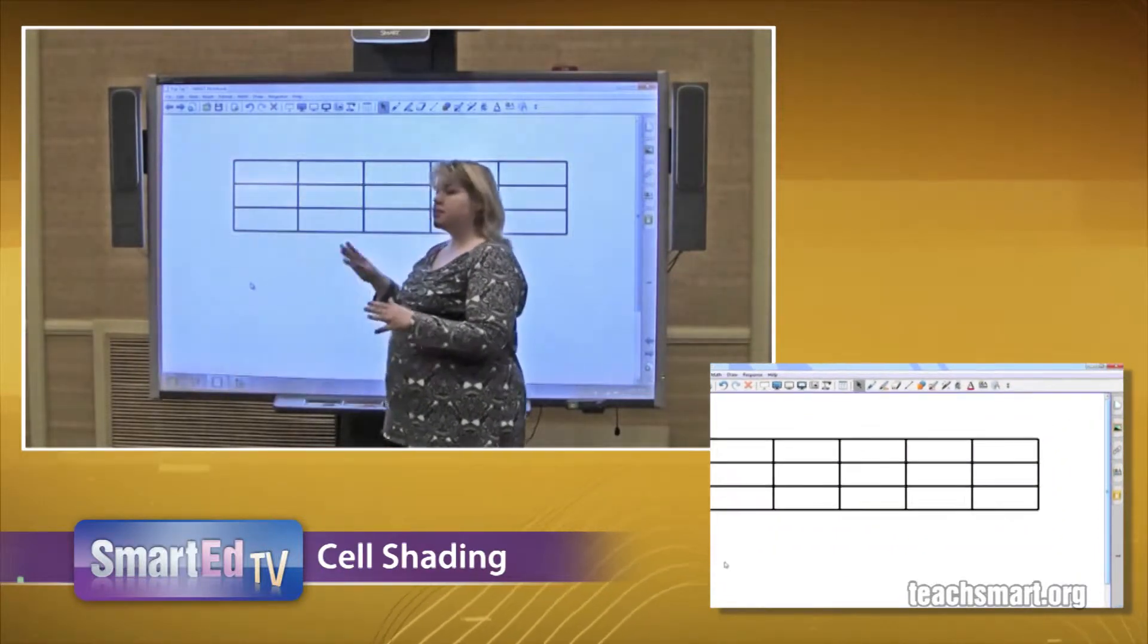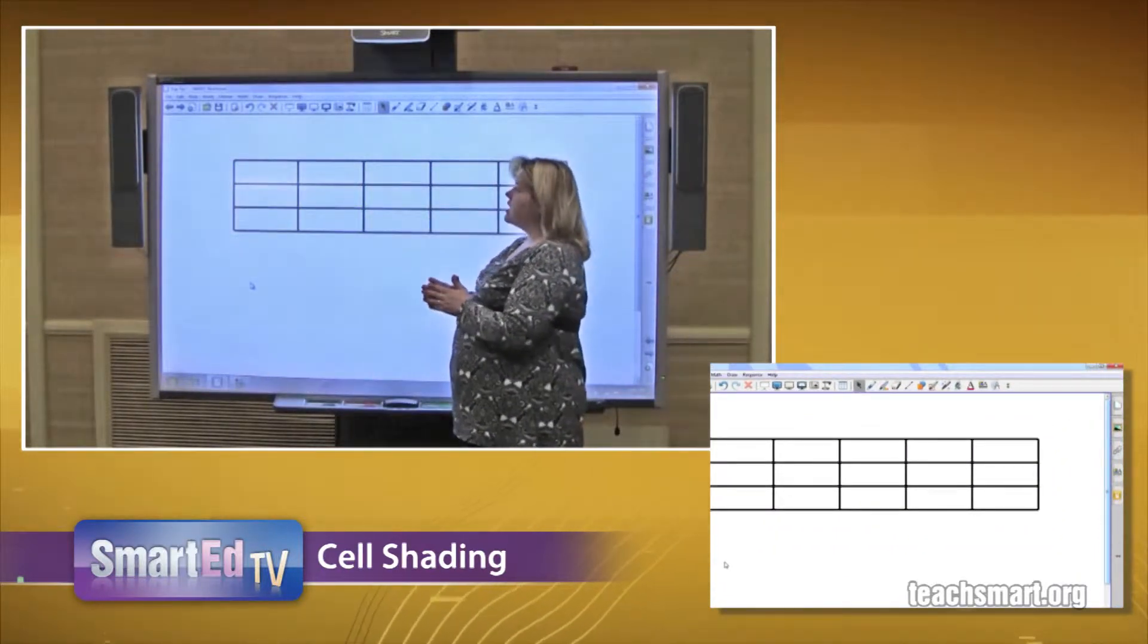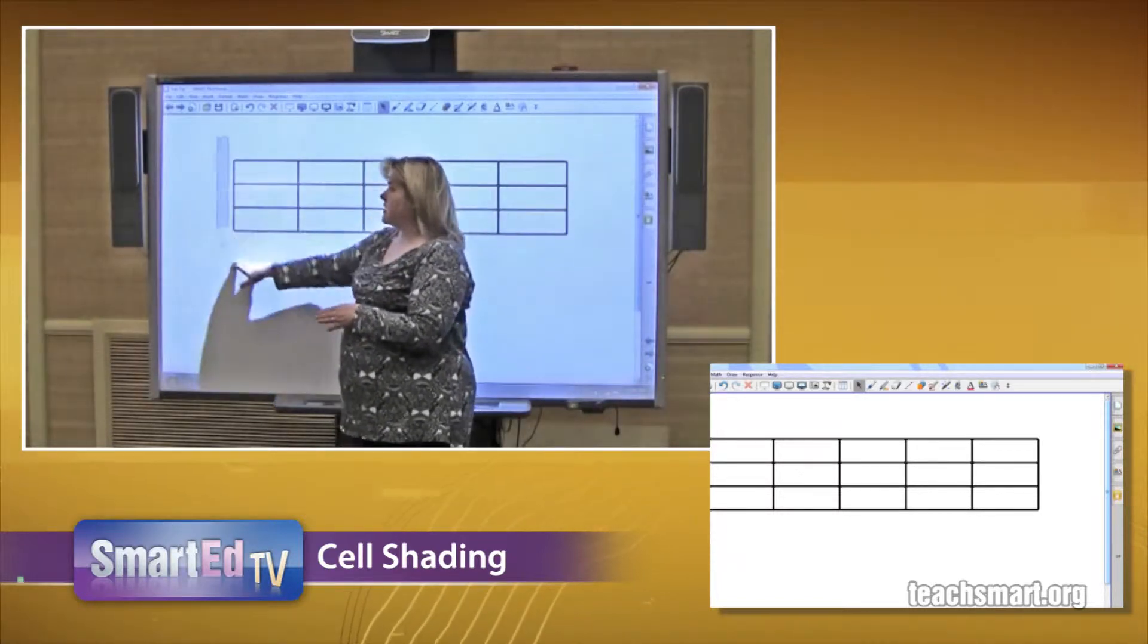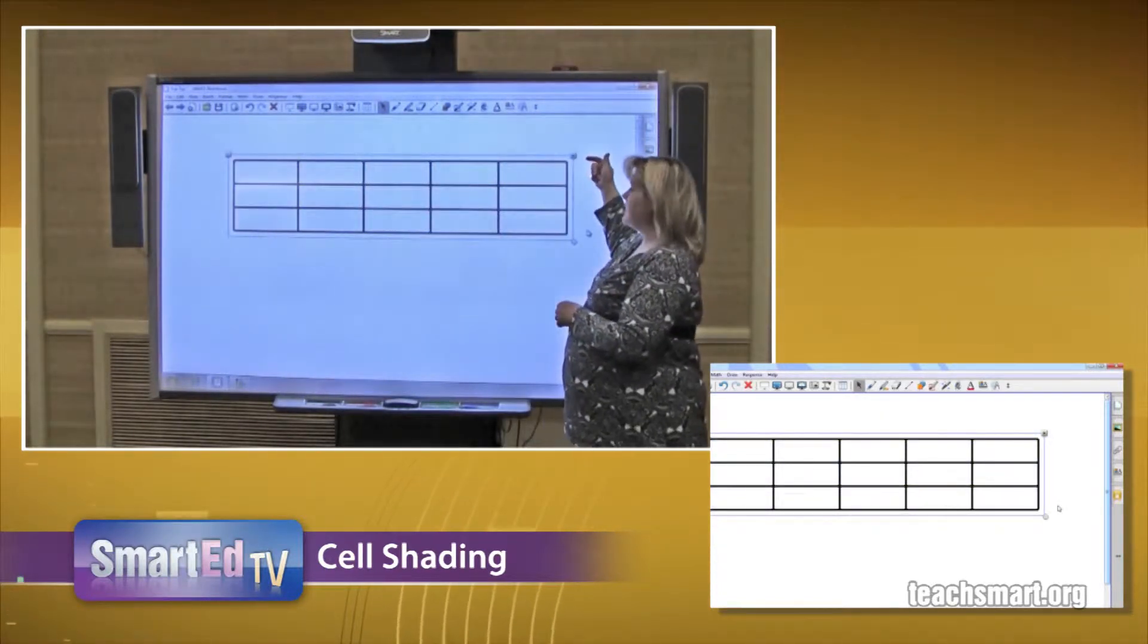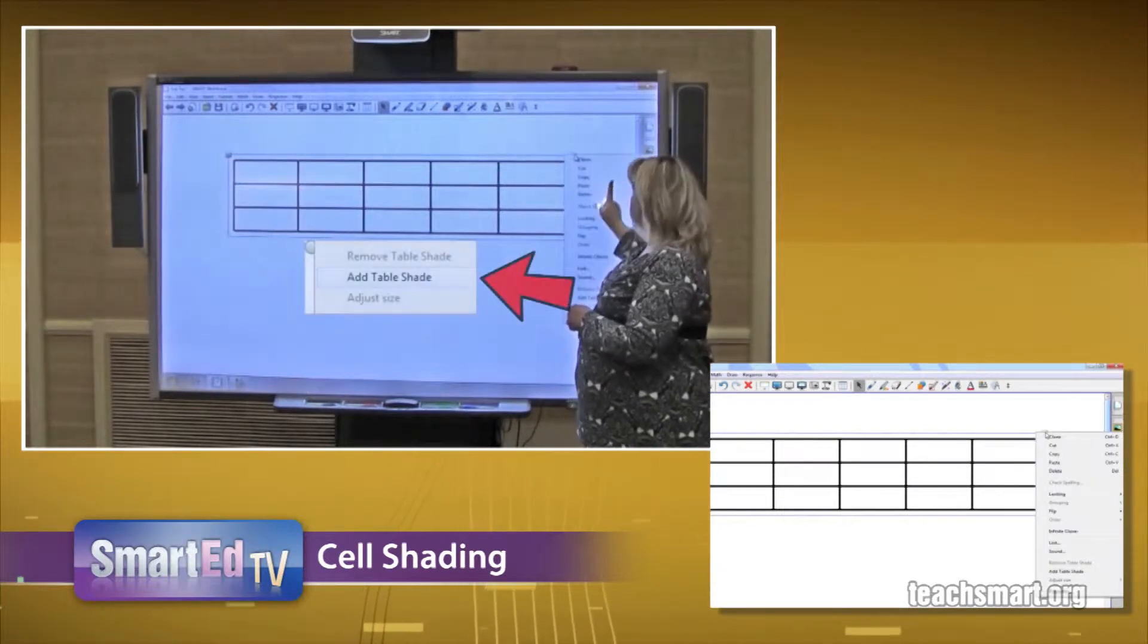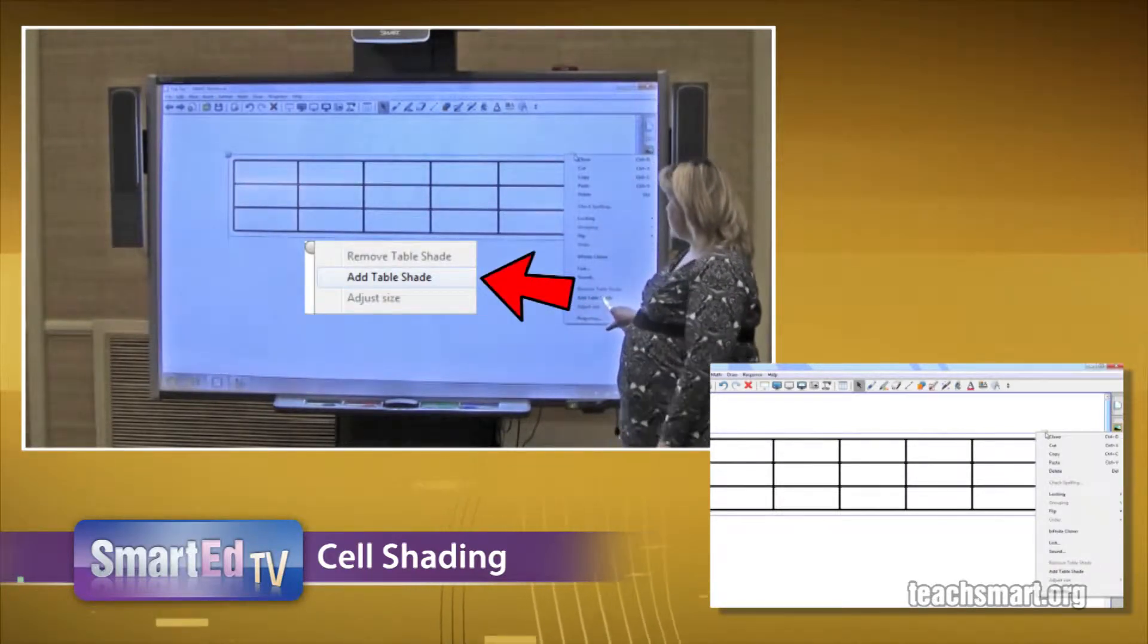Now if I want the entire table to be shaded, what I'll do is select the table and choose my gray drop down box in my upper right hand corner. Choose it down and I have the opportunity to add a table shade.